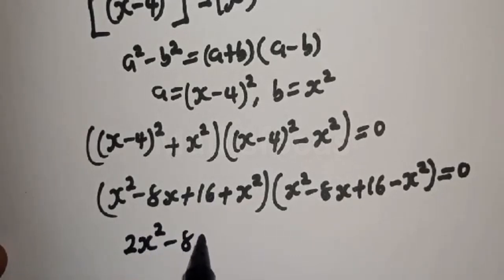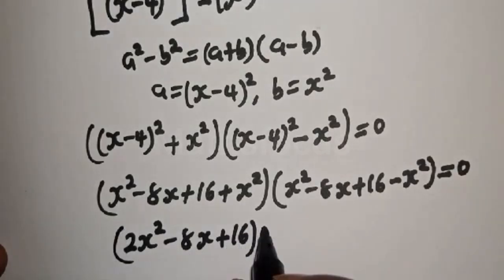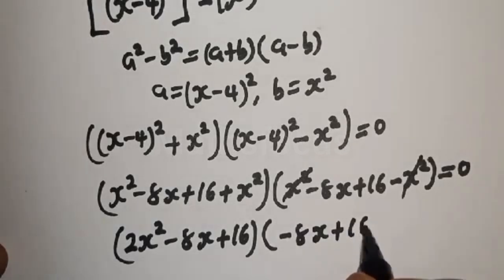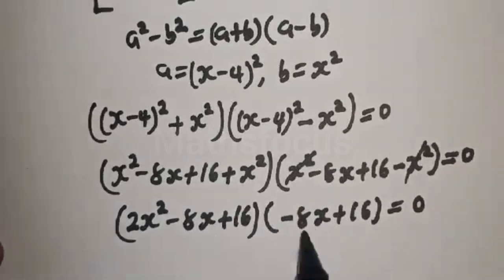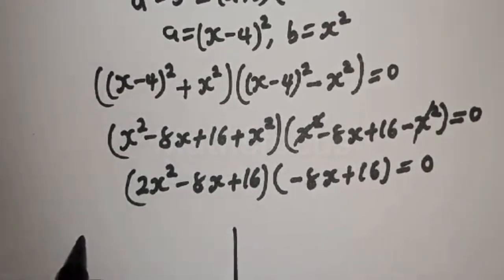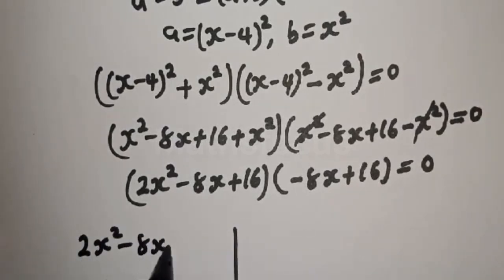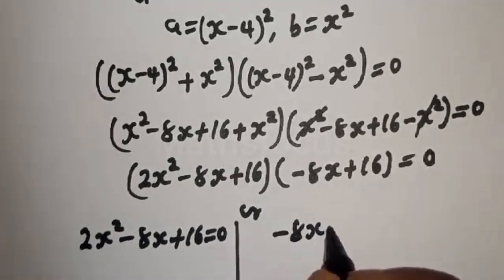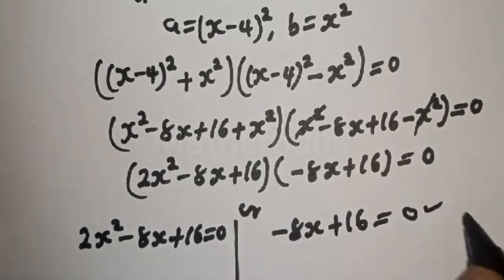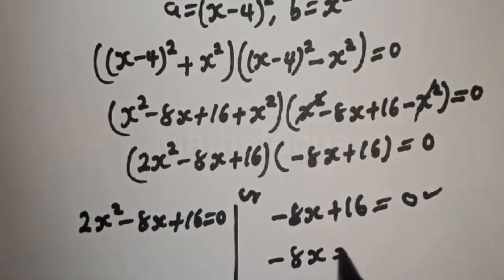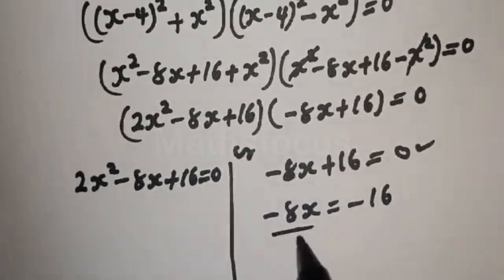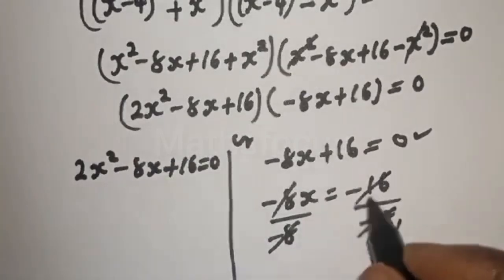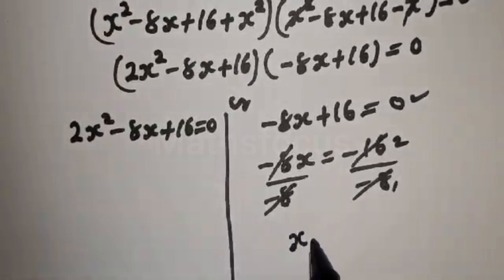Here x squared plus x squared gives 2x squared minus 8x plus 16. After cancellation in the second factor, we have minus 8x plus 16 equal to zero. There are two cases. The first case is 2x squared minus 8x plus 16 equals zero, and the second case is minus 8x plus 16 equals zero. Solving the second case: divide both sides by minus 8, giving x equals 2.